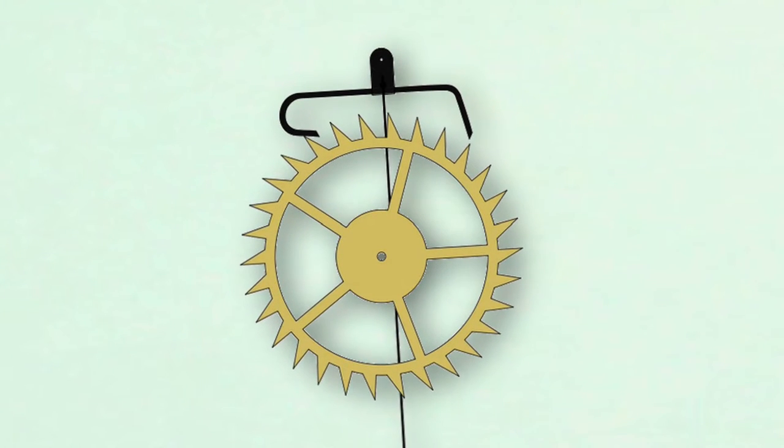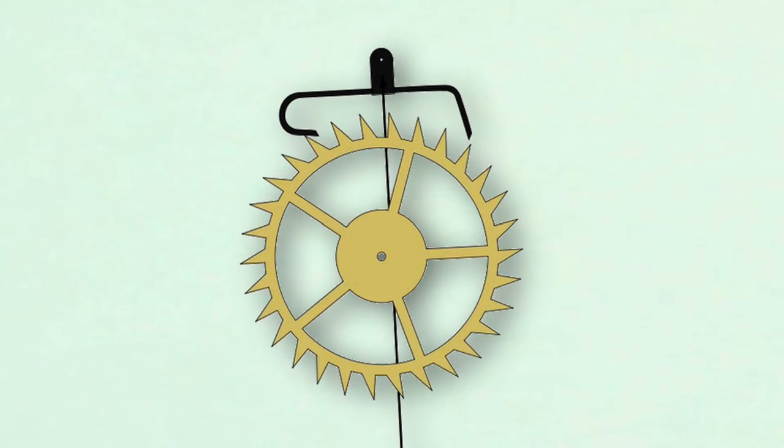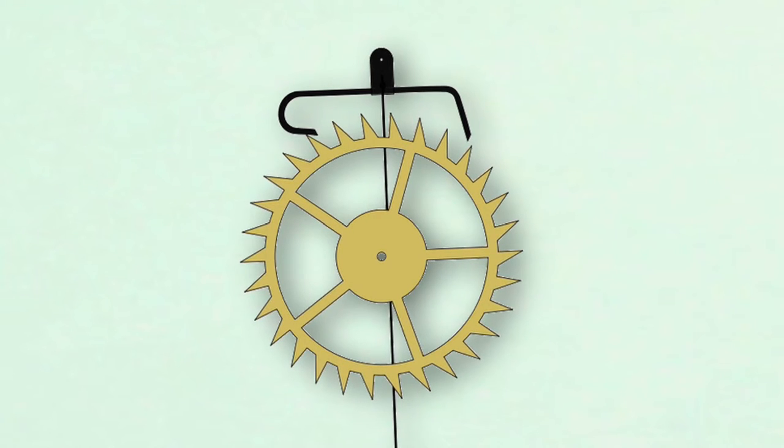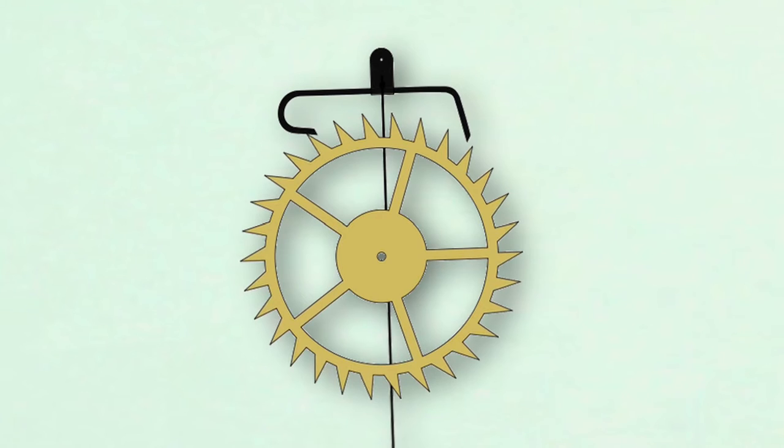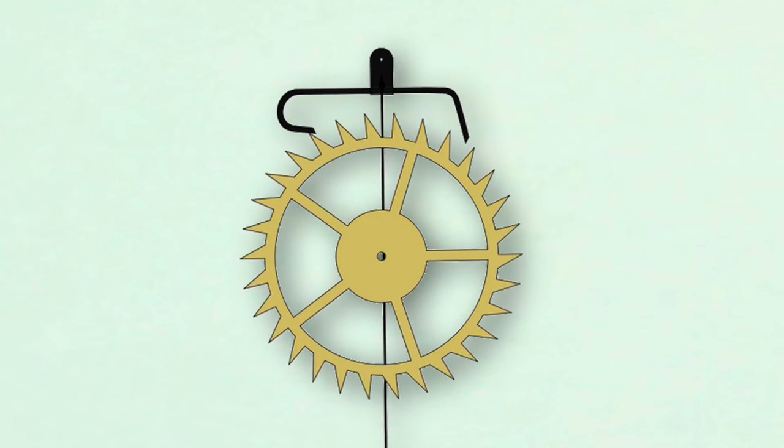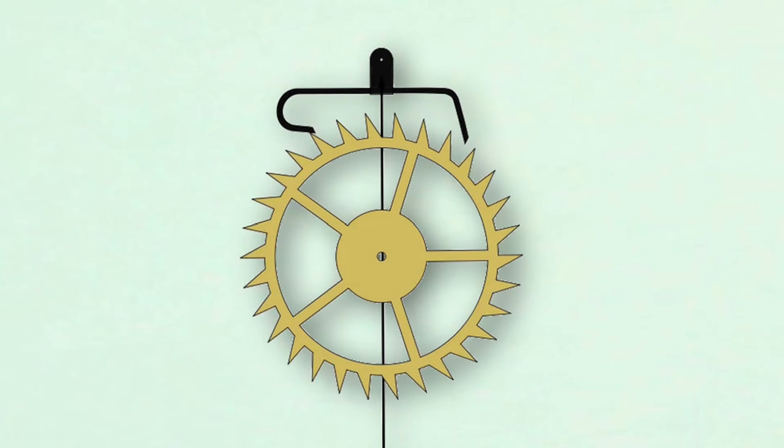Directly after the recoil, we see the escape wheel move smoothly forward as the escape wheel tooth slides along the pallet. This is when the escape wheel is giving impulse, or energy, to the pendulum.